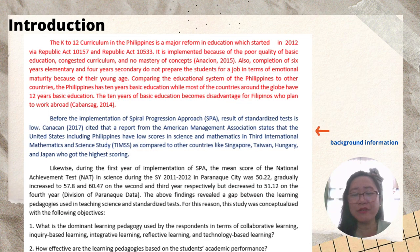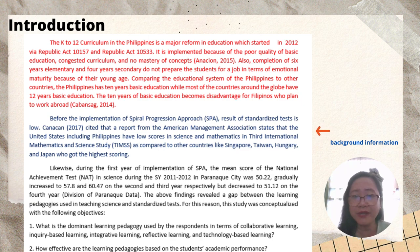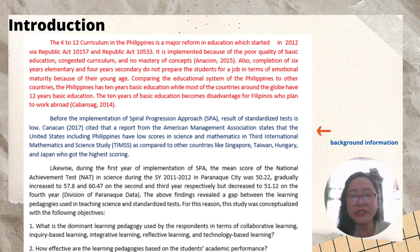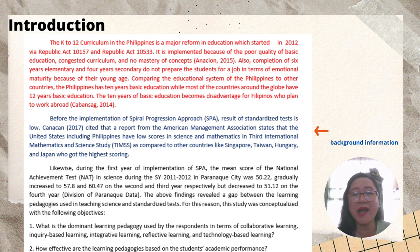You may also include the background information of your research. You may include here the related literature which is very strongly associated with your research. For instance: before the implementation of the spiral progression approach, results of a standardized test were low. Canakan (2017) cited that a report from the American Management Association states that the United States, including the Philippines, have low scores in science and mathematics in international mathematics and science studies, as compared to other countries like Singapore, Taiwan, Hungary, and Japan, who got the highest scores.